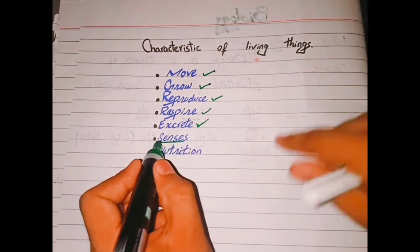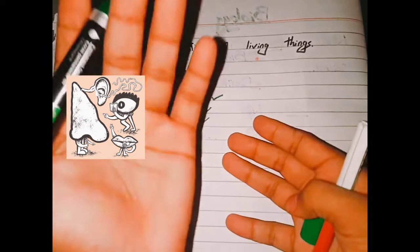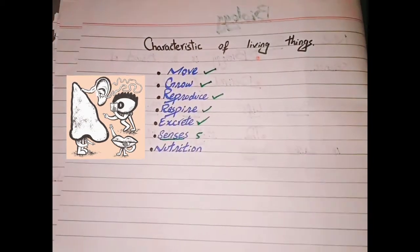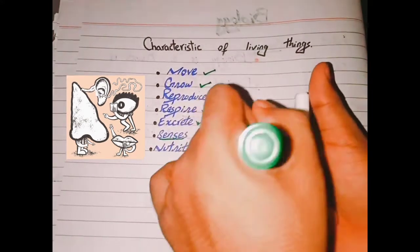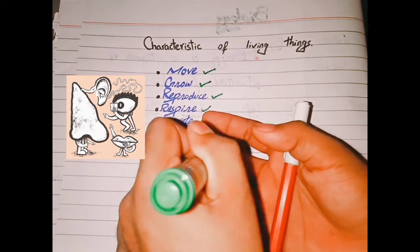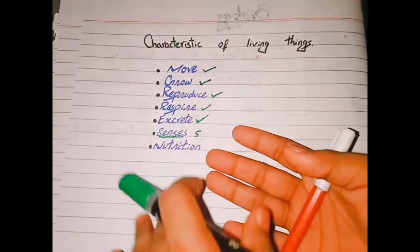Last is senses - the ability to listen and understand. There are five senses: touch, smell, sight, taste, and hearing. This is also a characteristic of living things.